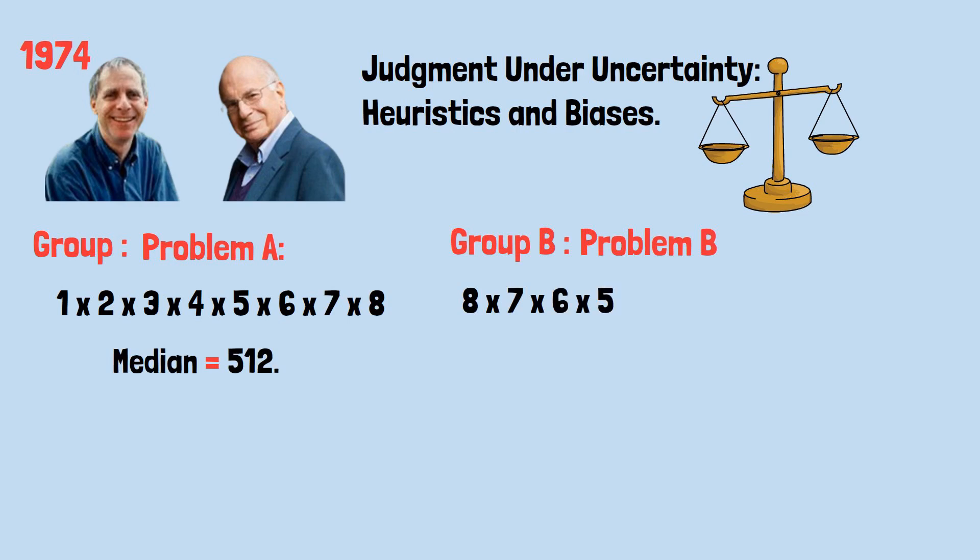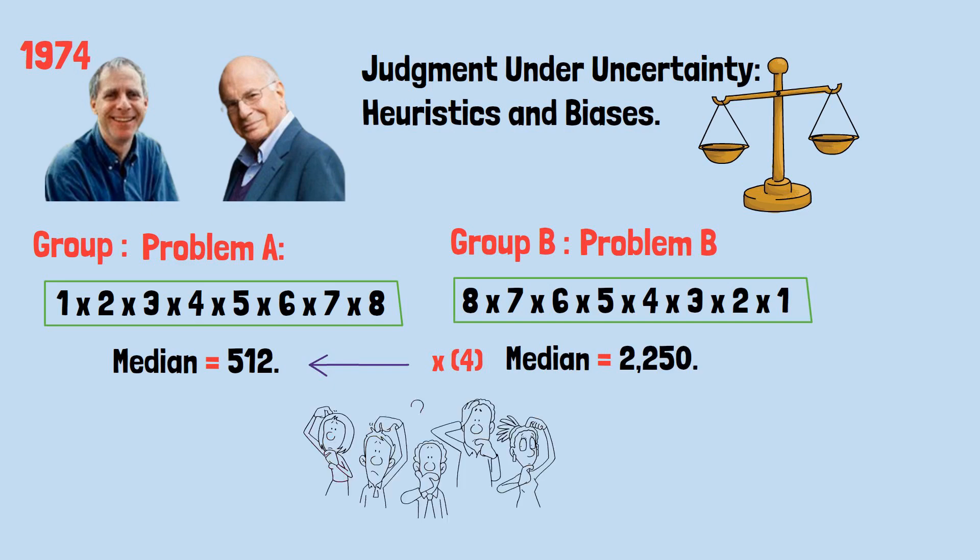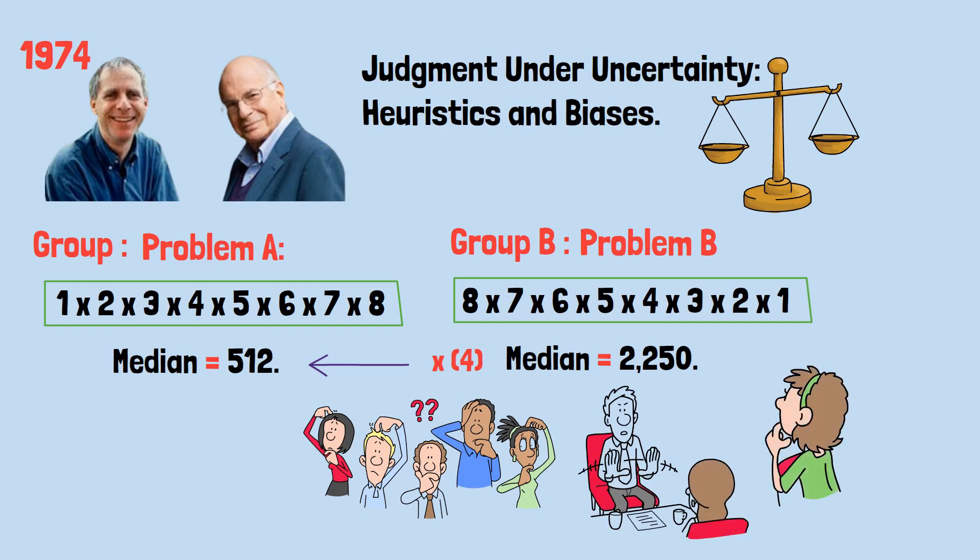Group B, who started by multiplying larger descending numbers, their median estimate was 2,250, over four times higher than group A, just because the order of the numbers was different. That seems weird, right? Nope. That's completely normal. We do this all the time and just don't know it.